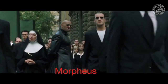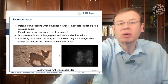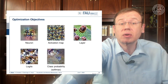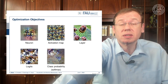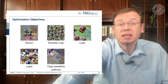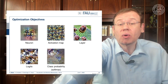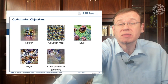Next, there's parameter visualization and optimization. The idea is that we want to optimize with respect to different levels: a specific neuron, an activation map, a layer, the actual logit, or the class probability via the softmax function.